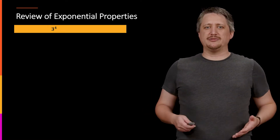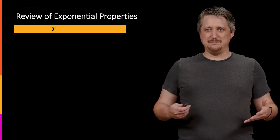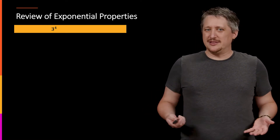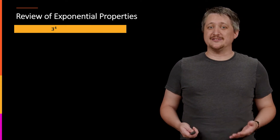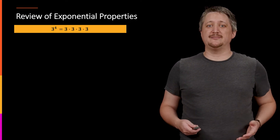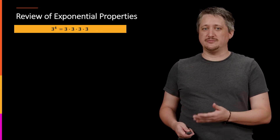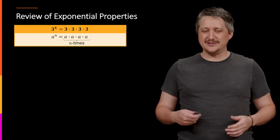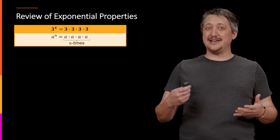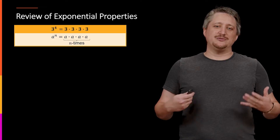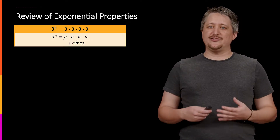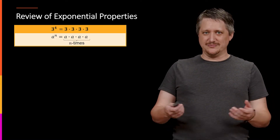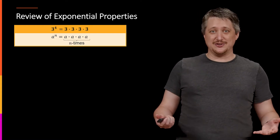So we have something like three to the fourth — what does that mean? The very basic definition of an exponent is that we're taking the thing and multiplying it against itself four times. So three to the fourth is three times three times three times three. In general, we write these as a to the n, which is just multiplying a against itself n times — the literal definition of our exponential.